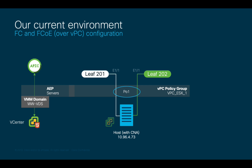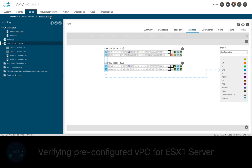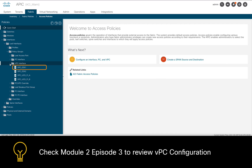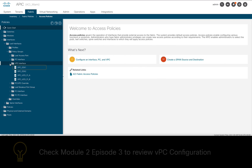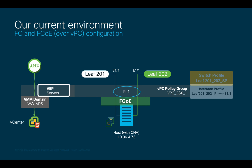which is used in a VPC policy group on leaf nodes 201 and 202, interface 1.1. This means that this ESX server's VPC is already configured. We can quickly verify that in APIC where you can see the ports already configured in VPC mode. We will only focus on enabling FCoE over such VPC, using the same physical adapters and adjusting the existing AEP, switch profiles, and policy groups as needed.